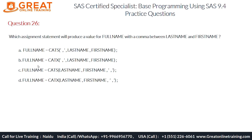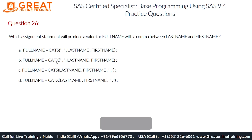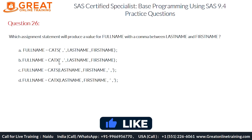Option B uses the CATX function and it adds a delimiter that acts as the first argument. CATX concatenates strings with a specified delimiter, and here it correctly places the comma between the last name and first name. The CATX function places the delimiter as the first argument and obeys all the rules, so option B is likely the correct choice.